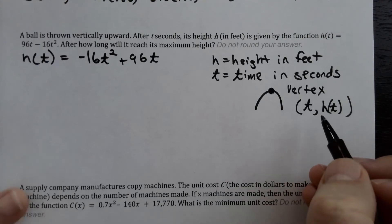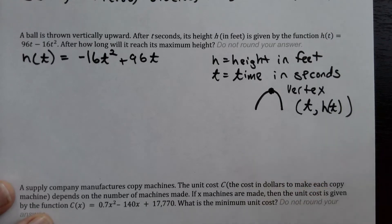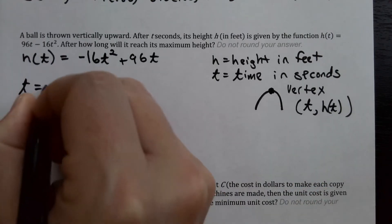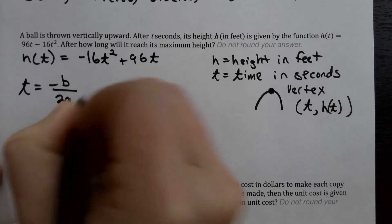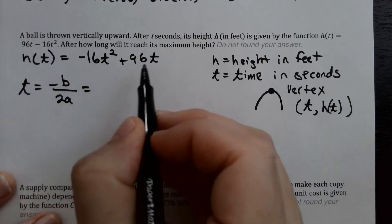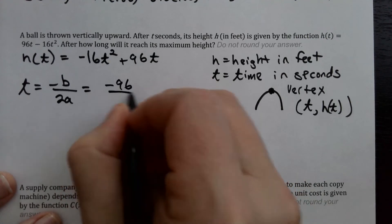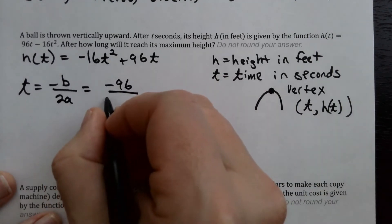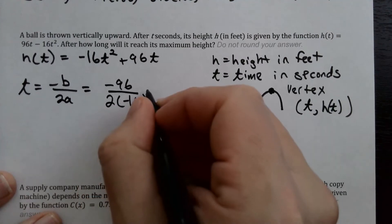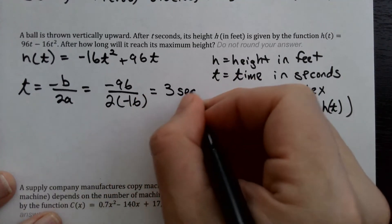We're looking for time, so we need the first part of the vertex. Using T equals negative B over 2A: our A is negative 16 and our B is 96, so we get negative 96 divided by 2 times negative 16, which gives us 3 seconds.